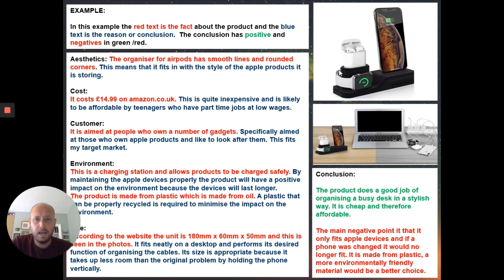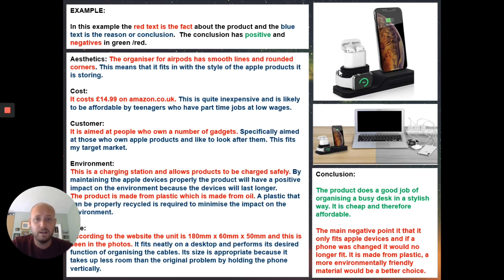Here's a completed example with a color code to help you understand how things have been done. The red text is a fact — a statement — and generally if you just state facts you're looking at a level three, maybe a maximum four. The first sentence states the organizer has smooth lines and round corners — we can see that from the picture, and that is not an analysis. The second sentence is what makes it an analysis. That justification is so important: it means it fits in with the style of Apple products it's storing, tying in with that sleek design style Apple have. By adding justification, it shows you understand the work of a designer.